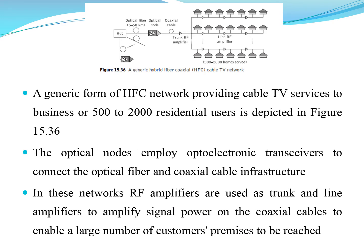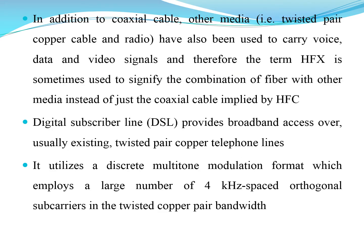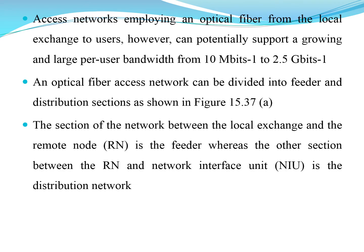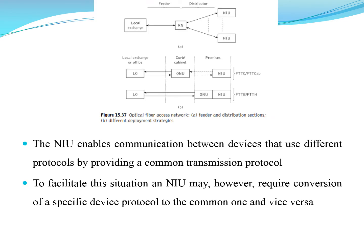This is the hybrid fiber coaxial cable network, HFC, which ranges from hundreds of kilometers. Between 500 to 2,000 residential users can be connected at a time. It has a speed of 4 Kbps and a data bit rate of 100 Mbps. This is how the local exchange, feeder, distributor, and unit arrangement is done.